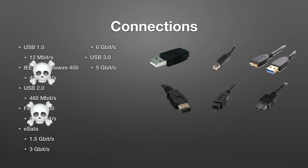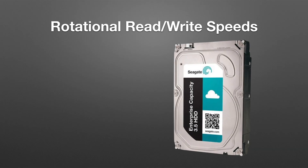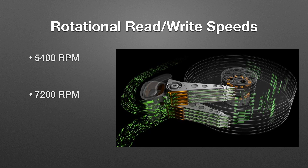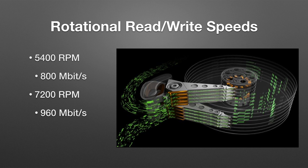Let's take a look at these speeds to help visualize this. Rotational drives contain platters inside of them. Data is read and written across these platters at varying speeds — faster on the outside, slower on the inside. These rotational drives can be purchased at different rotational speeds, the most common of which are 5400 RPM and 7200 RPM. Because of the varying read-write speeds across the hard drive platter, we're going to compare an average speed for each drive. 5400 RPM drives have a read-write average of 800 megabits per second, and 7200 RPM drives have a read-write speed of 960 megabits per second.